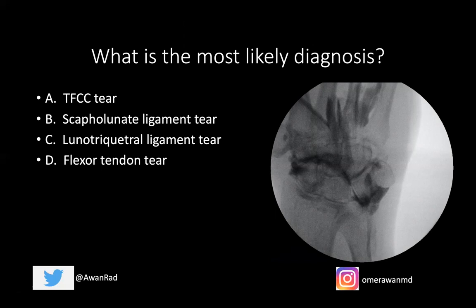If you take a look here, the key to all arthrogram cases is understanding where contrast should be and where contrast has gone in an area where it shouldn't be. Right off the bat, we notice there's some contrast outlining some of these tendons here. This is iatrogenic. When you do a dorsal injection, you're going to outline a lot of the extensor tendons, and I want you to avoid that — this is very common when doing wrist arthrograms.